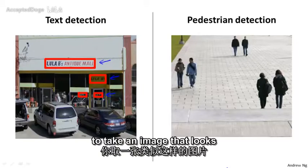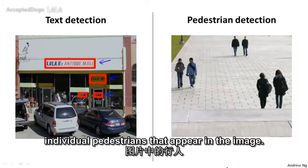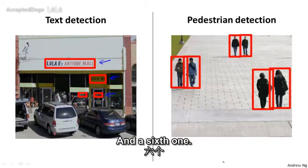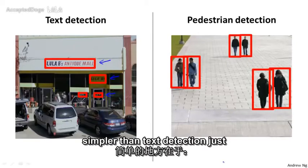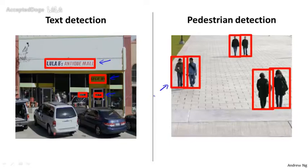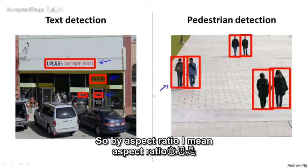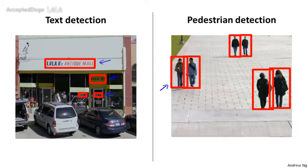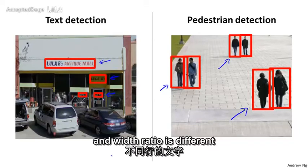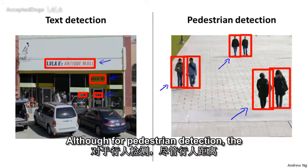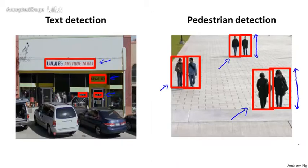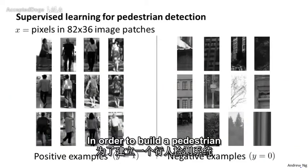In pedestrian detection, you want to take an image and find the individual pedestrians that appear in it. This problem is maybe slightly simpler than text detection because the aspect ratio of most pedestrians is pretty similar, so we can use a fixed aspect ratio for the rectangles we're trying to find. The aspect ratio is the ratio between the height and the width of these rectangles. For text detection, the height-to-width ratio is different for different lines of text, but for pedestrian detection it stays the same.